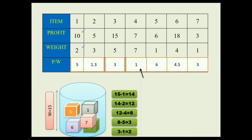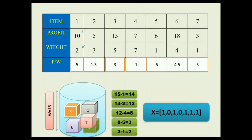Now we calculate the x values. If an item is placed in the bag, we assign it a value of 1; if not, we assign 0. Item 1 is placed: x=1. Item 2 is not placed: x=0. Item 3 is placed: x=1. Item 4 is not placed: x=0. Item 5 is placed: x=1. Item 6 is placed: x=1. Item 7 is placed: x=1.